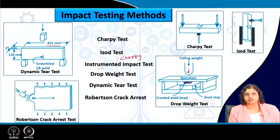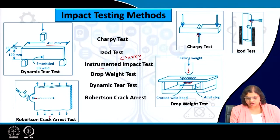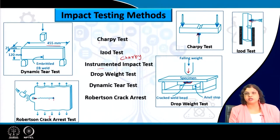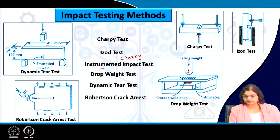There is also the Robertson crack arrest test. Here there is a specimen with a machined notch, impacted with a pendulum at a very high strain rate, with a variation in temperature throughout the specimen. This allows us to figure out at what temperature the crack propagation is arrested. We can determine the particular temperature of interest, or if we know the service temperature, determine what kind of strain rate allows the crack to stop at that temperature, and design the experiment based on service requirements.